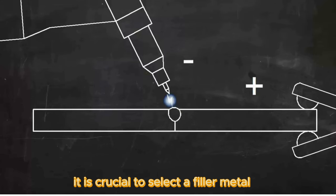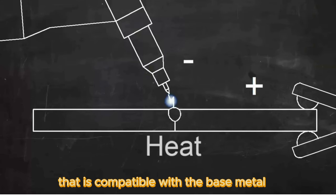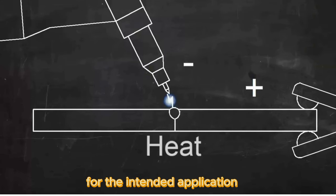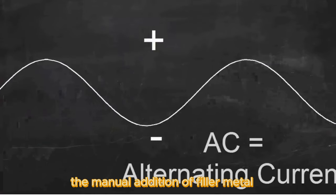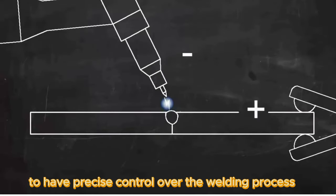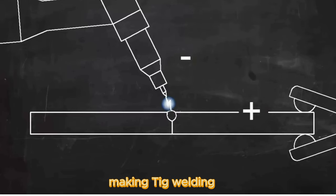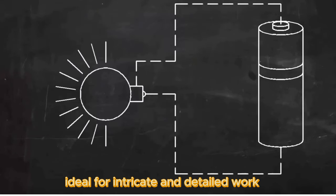It is crucial to select a filler metal that is compatible with the base metal and has the necessary strength for the intended application. The manual addition of filler metal allows the welder to have precise control over the welding process, making TIG welding ideal for intricate and detailed work.